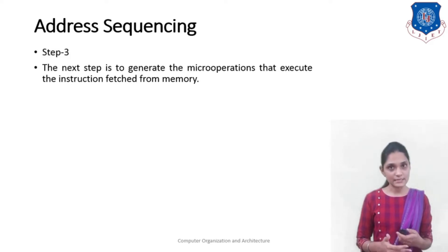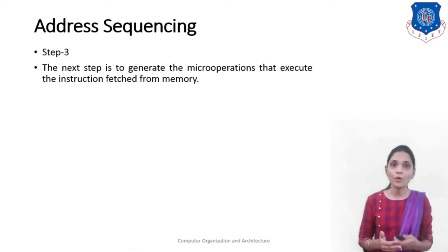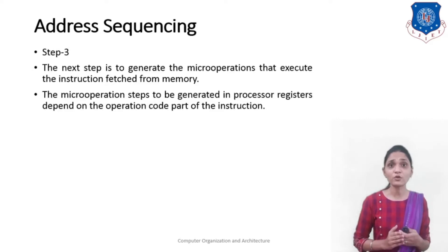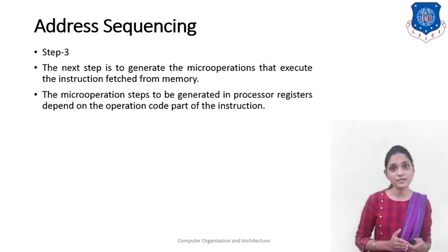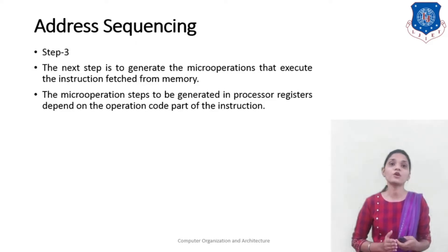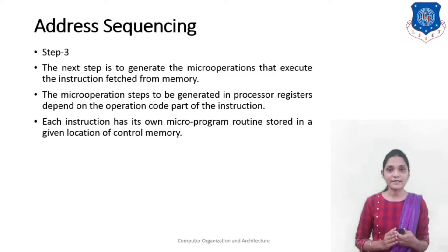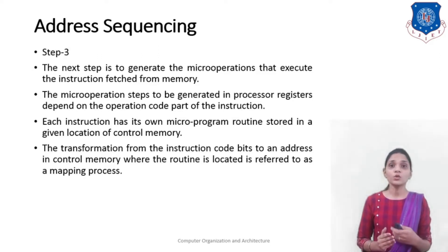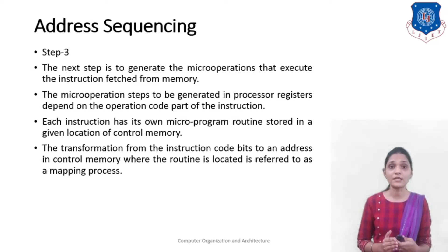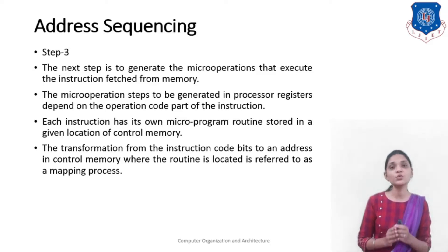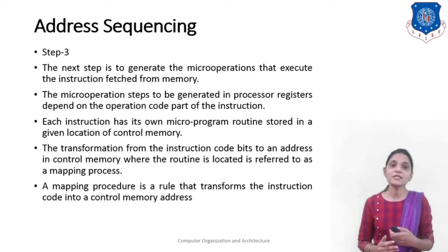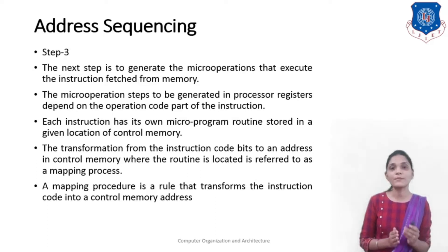In step 3, we generate the micro operations that execute the instruction fetched from memory. The micro operations generated in the processor register depend on the operation code part of the instruction. Each instruction has its own micro program routine stored at a given location in the control memory. The transformation from the instruction code bits to the control memory address where the routine is located is referred to as the mapping process.